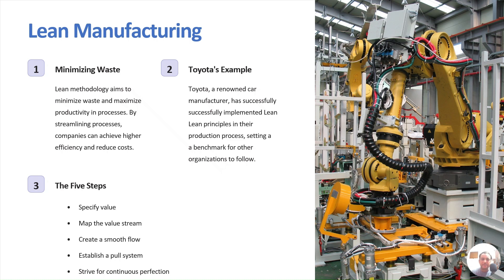This approach extends beyond manufacturing today — in the service industry it involves areas such as marketing, customer service, and finance. The five steps to implement lean manufacturing are: specify the value, map the value stream, create a smooth flow, establish the pull system, and then strive for perfection in the long term.